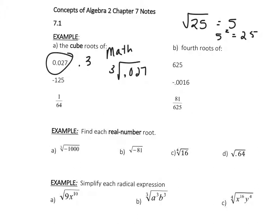Since this is a decimal, you want to end it as a decimal. Now you can take the cube root of a negative number, because a negative times a negative times a negative is a negative. So the cube root of negative 125 is negative 5. And the cube root of 1/64 is 0.25, but since this is a fraction, you want to change it back to a fraction, and the answer is one-fourth.